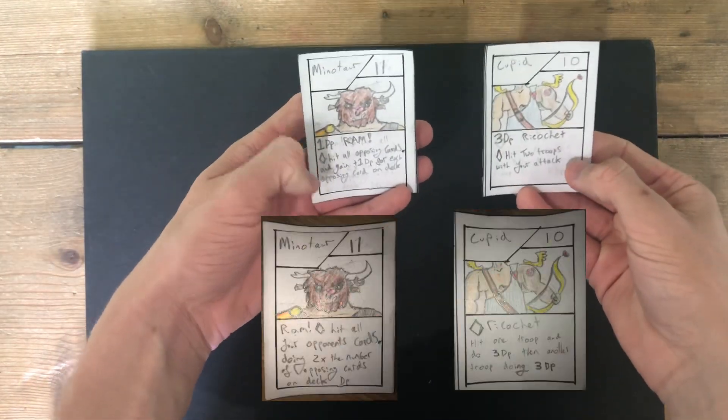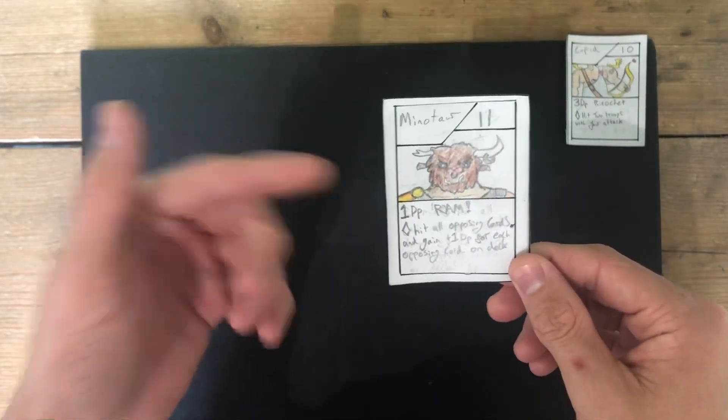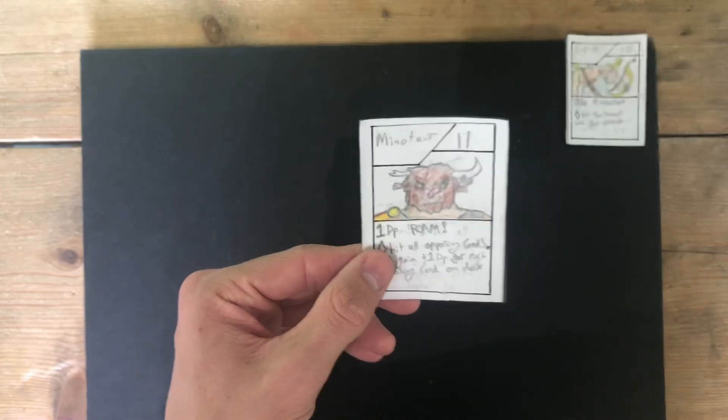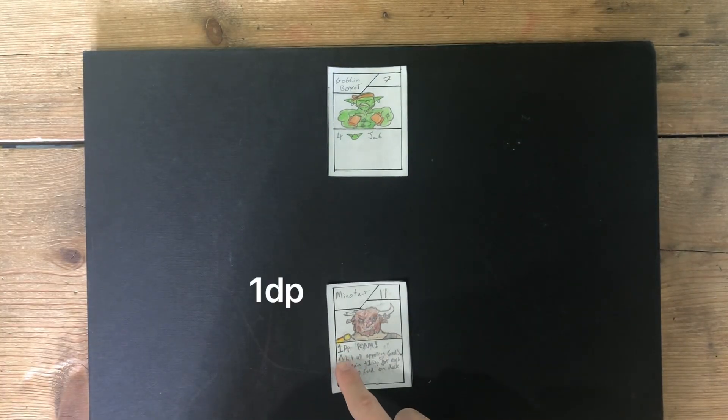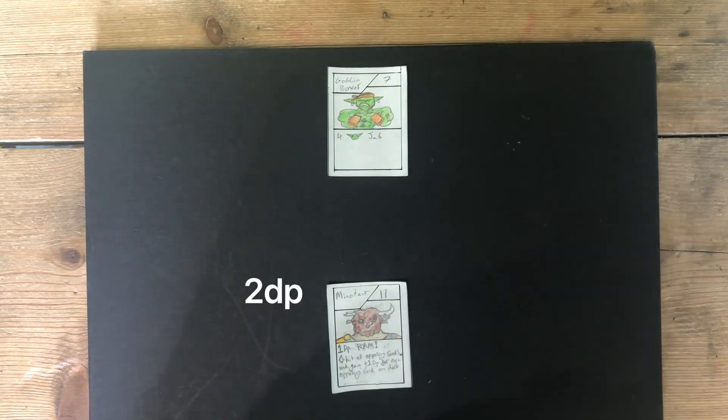Minotaur and Cupid are getting their damage separated from their attacks. Cupid has not got any other changes. The Minotaur no longer does 2 times the amount of opposing cards, but instead, 1 plus the amount of opposing cards. Here, if I was to attack, I do 1 damage plus 1, because they have 1 card, therefore I would do 2 damage to all opposing cards. In this case, just the Goblin Boxer.